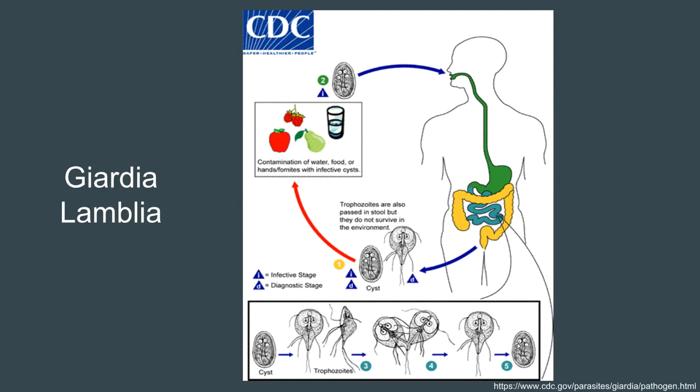The infectious stage of Giardia is a cyst. Once inside of a host, these cysts open and produce two trophozoites. The trophozoites remove nutrients from the host, reproducing via binary fission. As they move towards the colon, they encyst, allowing themselves to be transmitted to other hosts.